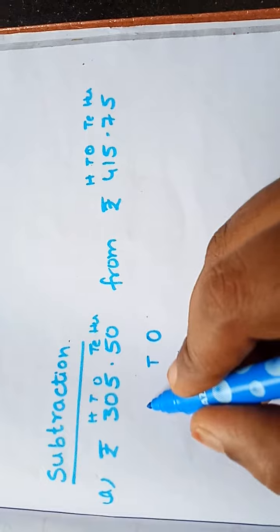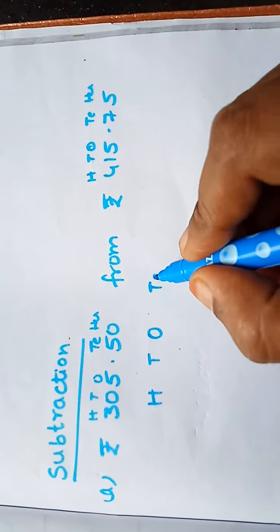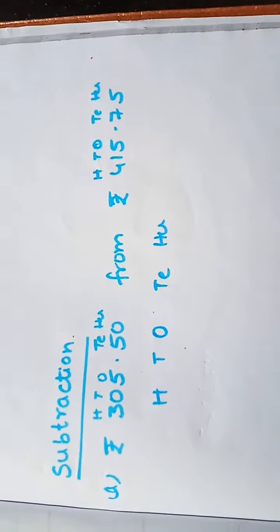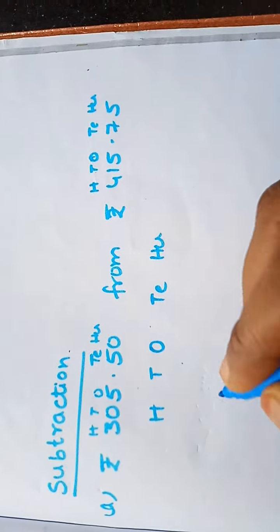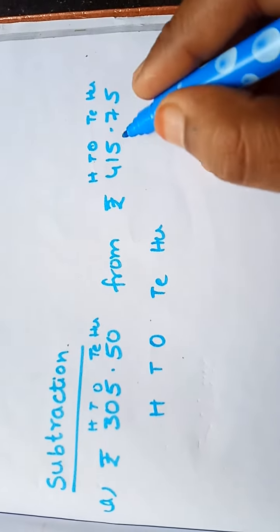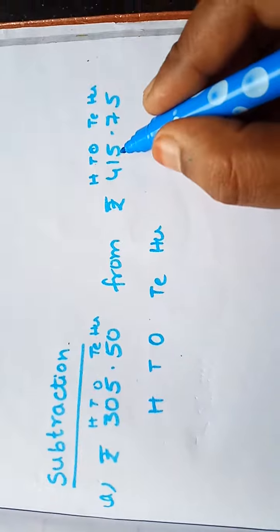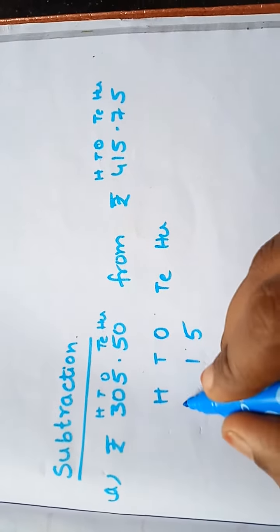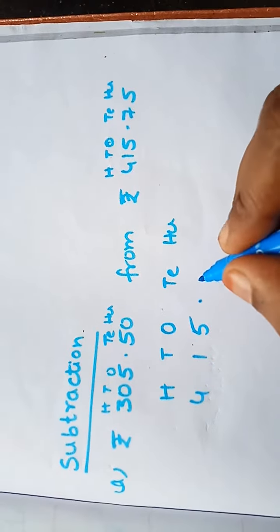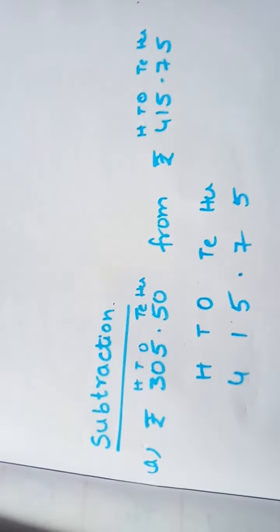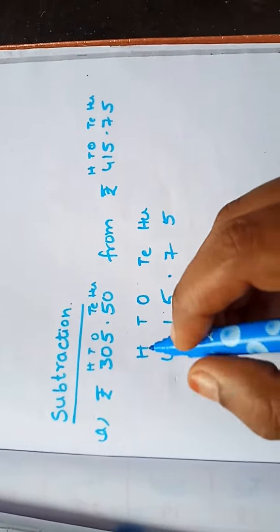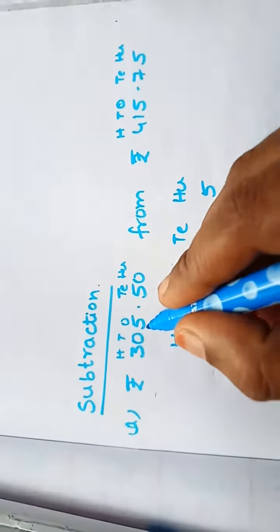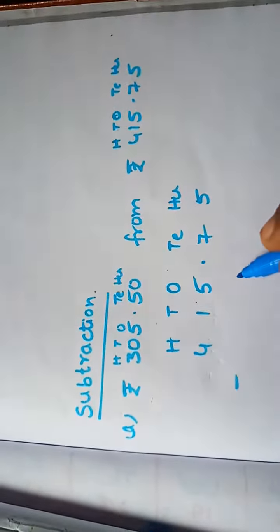Write the place values: ones, tens, hundreds, tenths, hundredths. Now write the first number in its place values — start with the ones place: 5, 1, 4 point 7, 5. So the number is 514.75. Next, write the second number in its place values.